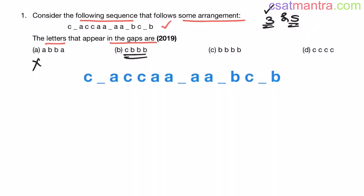Let's proceed with option B: C, B, B, B. Now let's choose 3 letter set. C, C, A, C, C, A - both are same. A, B, A, A, B, B - no, both are not same. C, B, B. It doesn't follow any sequence.